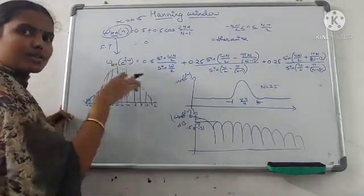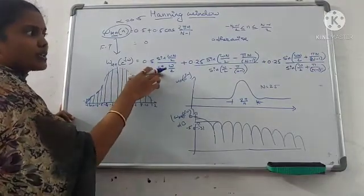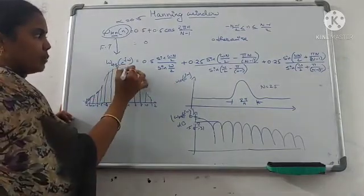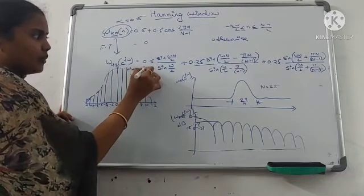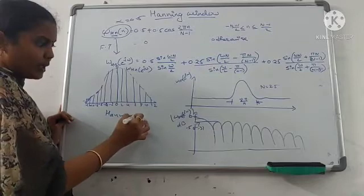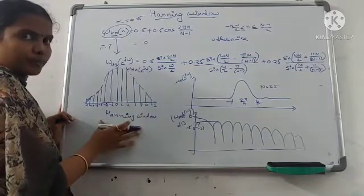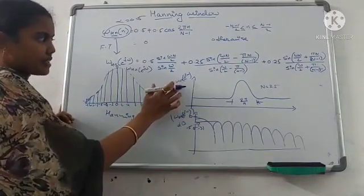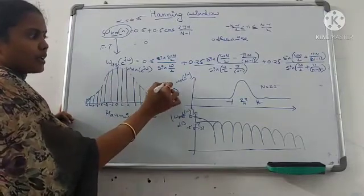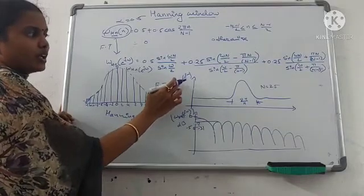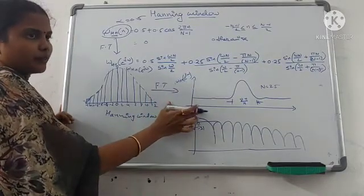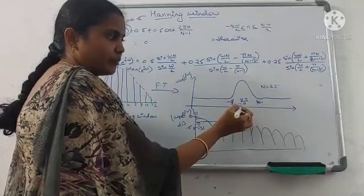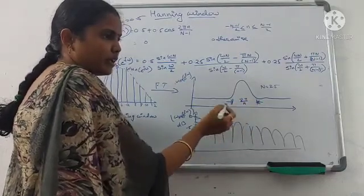To get this Fourier transform equation, follow the steps used in the raised cosine window procedure. This is W_H(e^jω), the Hanning window spectrum. After multiplying the Hanning window with the impulse response, you get H_R(e^jω). Here the main lobe width is 8π/N.